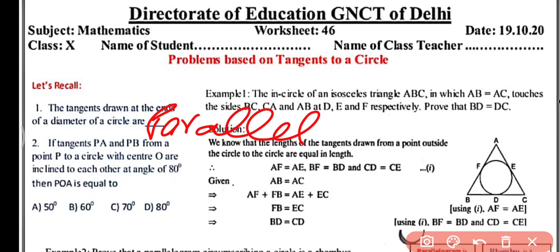Question 2: if the tangents PA and PB from a point P to a circle with center O are inclined to each other at an angle of 80 degrees, then angle POA equals 50 degrees. These two questions we have already done in the previous video, so you can watch that from the playlist.